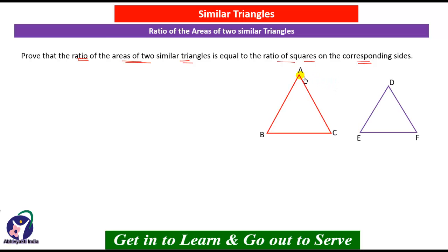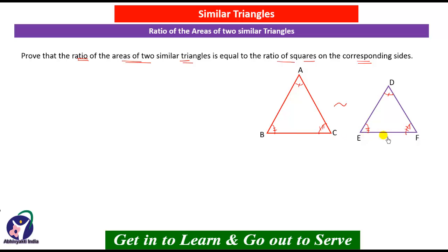The two triangles given are triangle ABC and triangle DEF, and it is said that both triangles are similar. Since both triangles are similar, the corresponding angles are equal: angle A equals angle D, angle B equals angle E, and angle C equals angle F. Similarly, the ratio of their corresponding sides will be equal: AB upon DE equals AC upon DF equals BC upon EF.